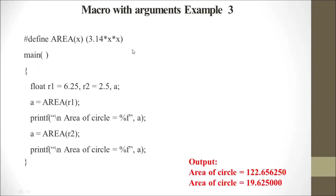This is an example of macro with arguments. We use #define AREA(x) (3.14 * x * x), where x is the argument. This complete formula is assigned to the macro AREA(x), so whenever AREA is called with an argument, this formula is automatically used.